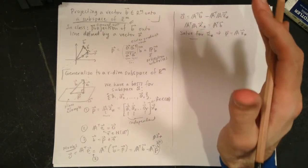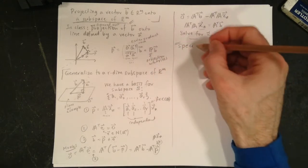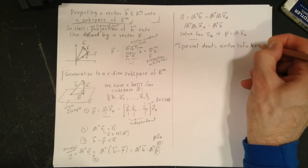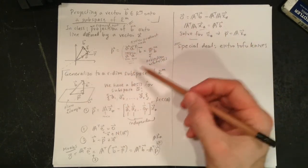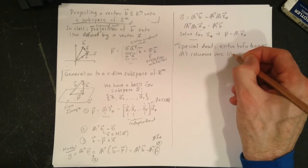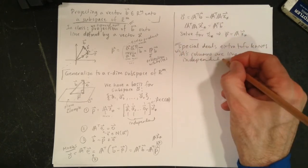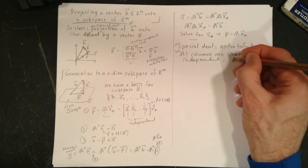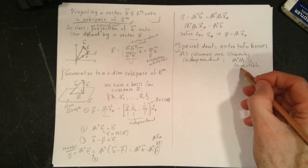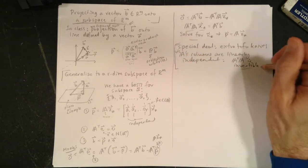Now there's a special thing. For this particular problem, sometimes we get the extra tofu knives, right? Special deal. It's not true in general, but if you're projecting onto a subspace with a basis, A's columns are linearly independent. So because we have this, A transpose A is actually invertible. And that's good. It's definitely a square matrix. It's always a square matrix. It's invertible. That's a special property here. So I'll come back to that one, why that is. That's a sneaky thing.